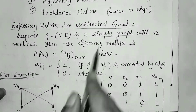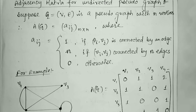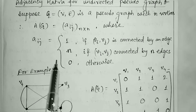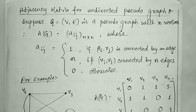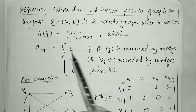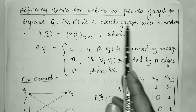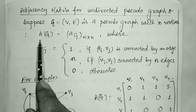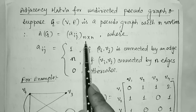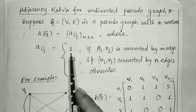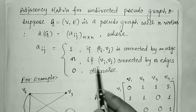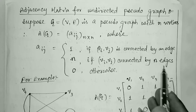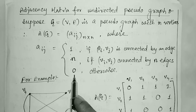This is the adjacency matrix for the undirected simple graph. Now, for the undirected pseudograph — a graph which contains loops and parallel edges — suppose G is a pseudograph with n vertices. Then A(G), the adjacency matrix, is represented by A(i,j) of order n×n, where A(i,j) equals 1 if there is connectivity by an edge, equals n if two vertices are connected by n parallel edges, and 0 otherwise.